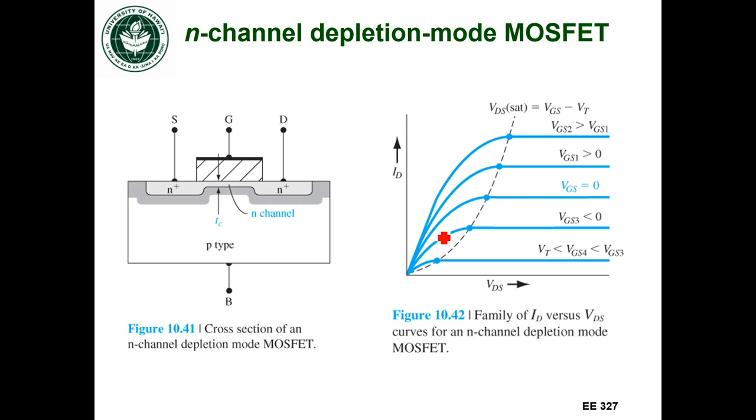VGS equals zero. I'm already following one of these curves so that my drain current will be increasing as I vary VDS.